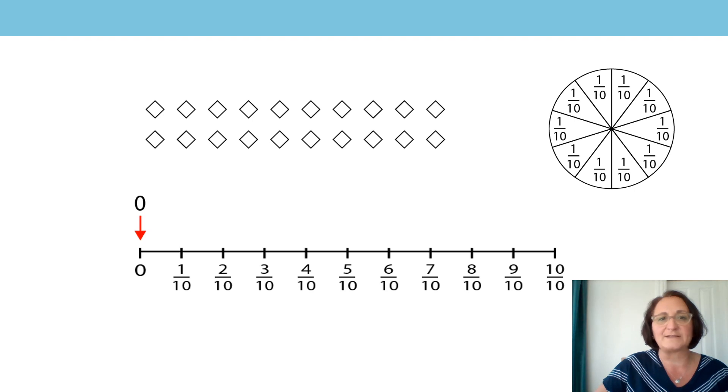Yes, we could think back to other lessons and start to try and visualise. So can you see ten equal parts anywhere? Yes, I can too. I can see that there are ten columns on two rows, but I can see that there are ten columns, and within each of those columns, there are two shapes. So for every tenth, it must be one column, or two shapes. Let's see what happens to these columns, and let's see what happens to the circle when we move along the number line.